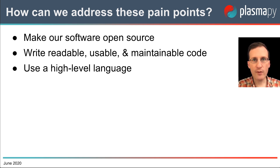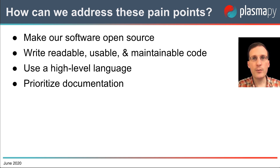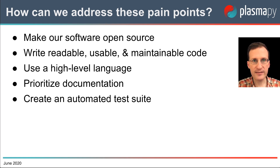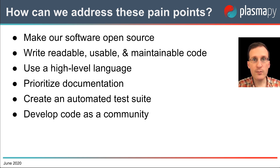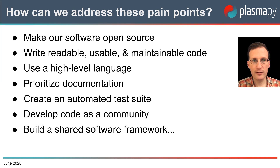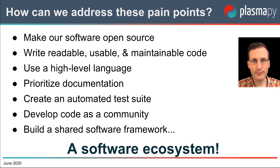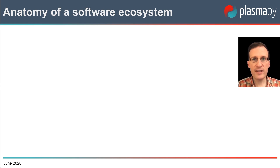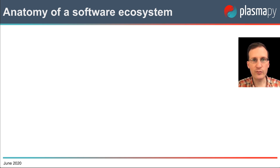We can prioritize writing and updating documentation so that new users have a place to go to get started. We can create a suite of automated tests that gets run every time we change the code. Different software projects can coordinate with each other to develop code as a community, and by doing so, we can build a shared software framework. Our solution is to create a software ecosystem. We began PlasmaPy to address each of these pain points by fostering a Python ecosystem for plasma science, while taking care to use best practices from research software engineering.